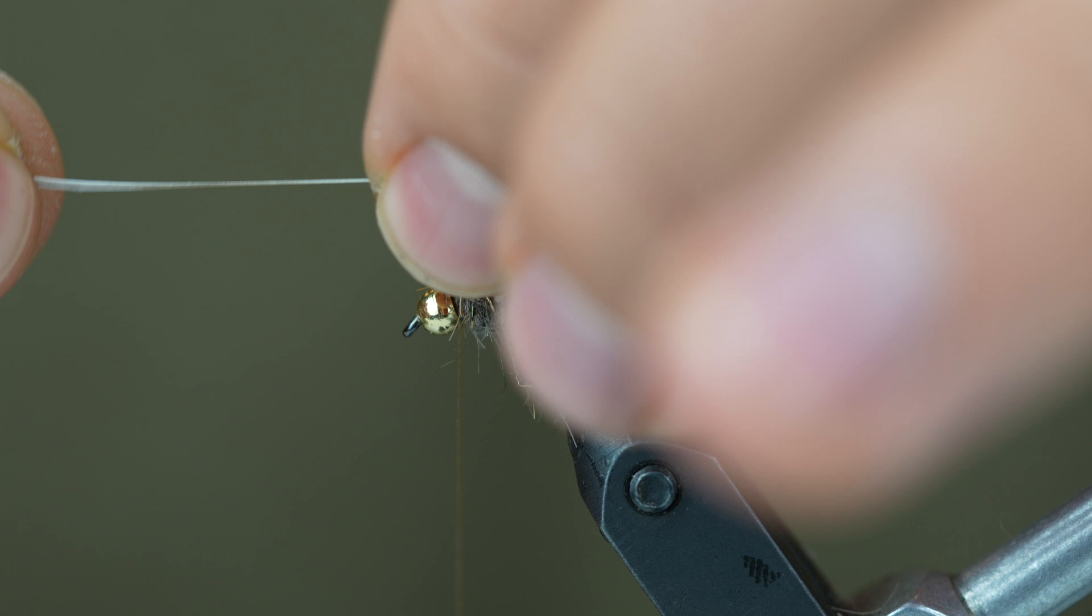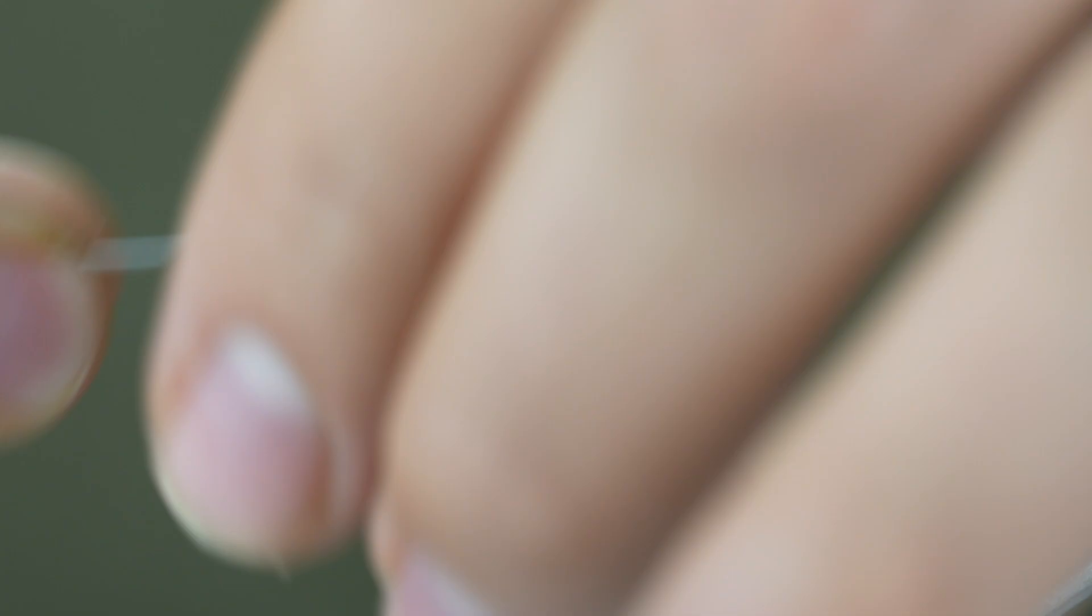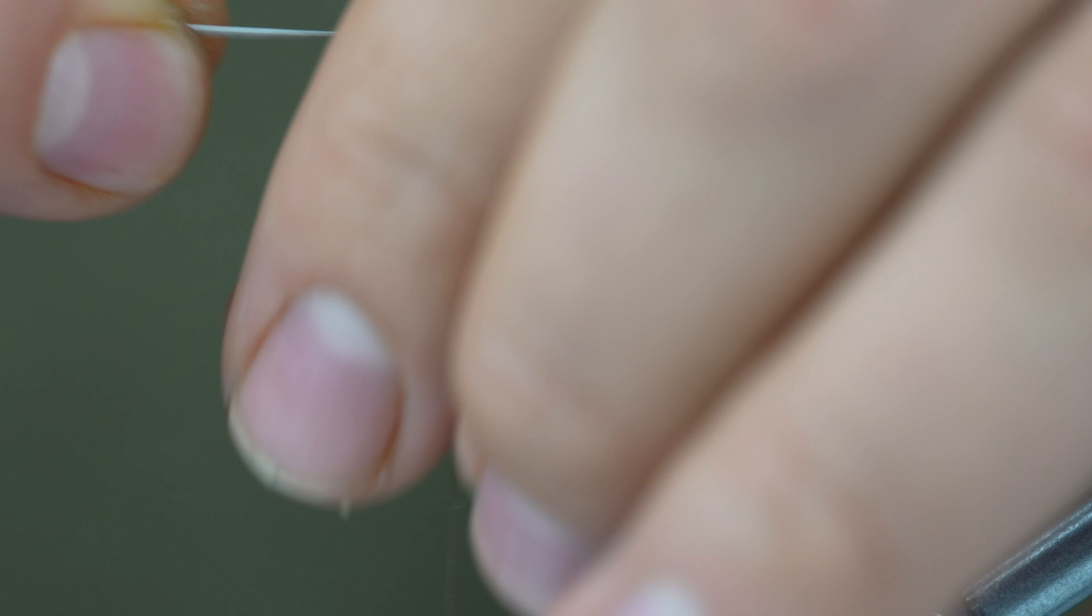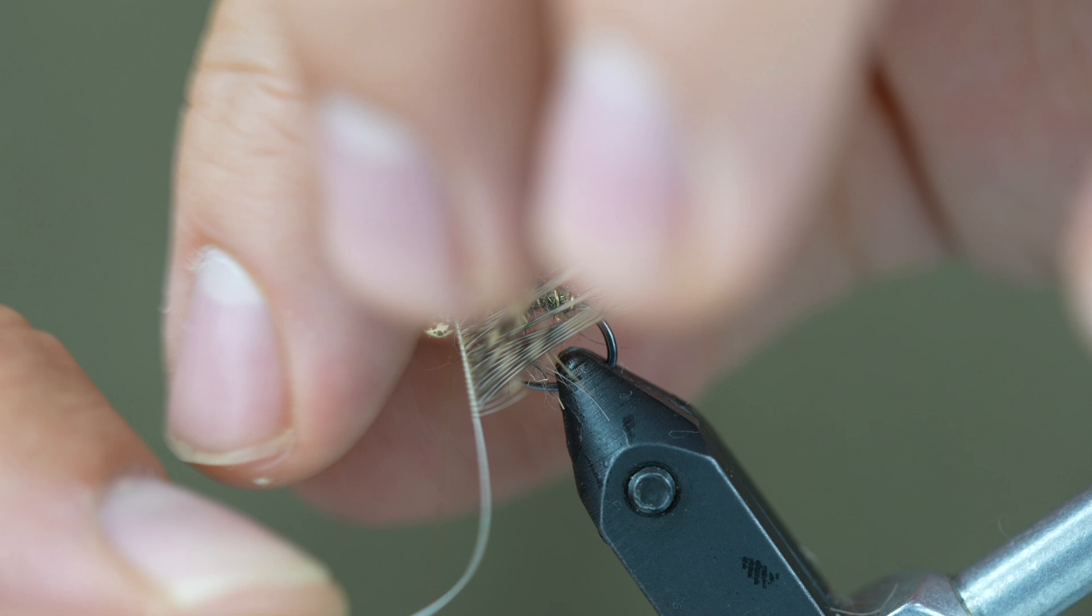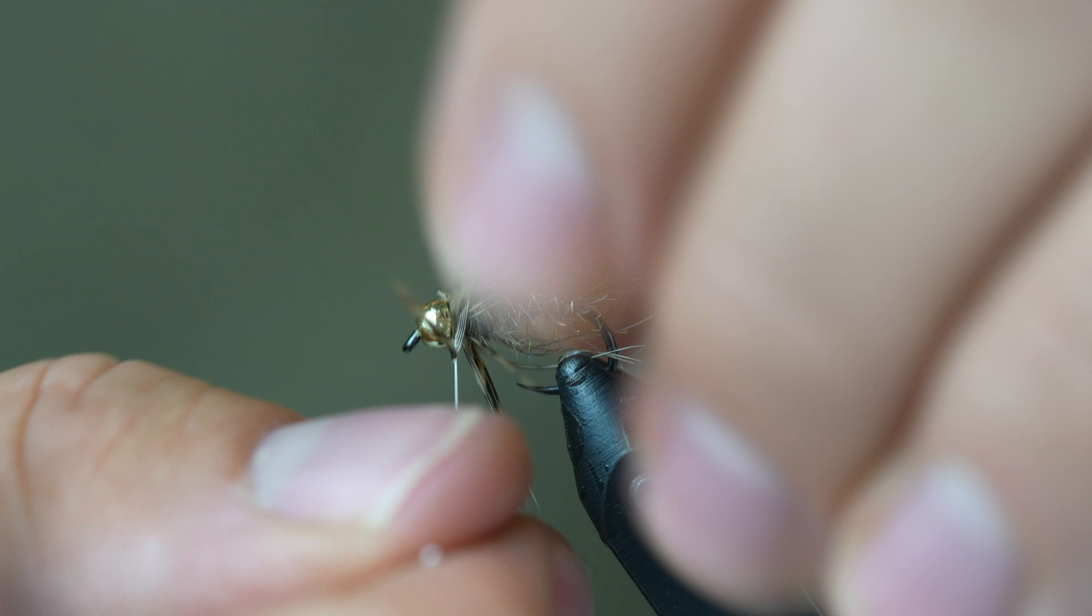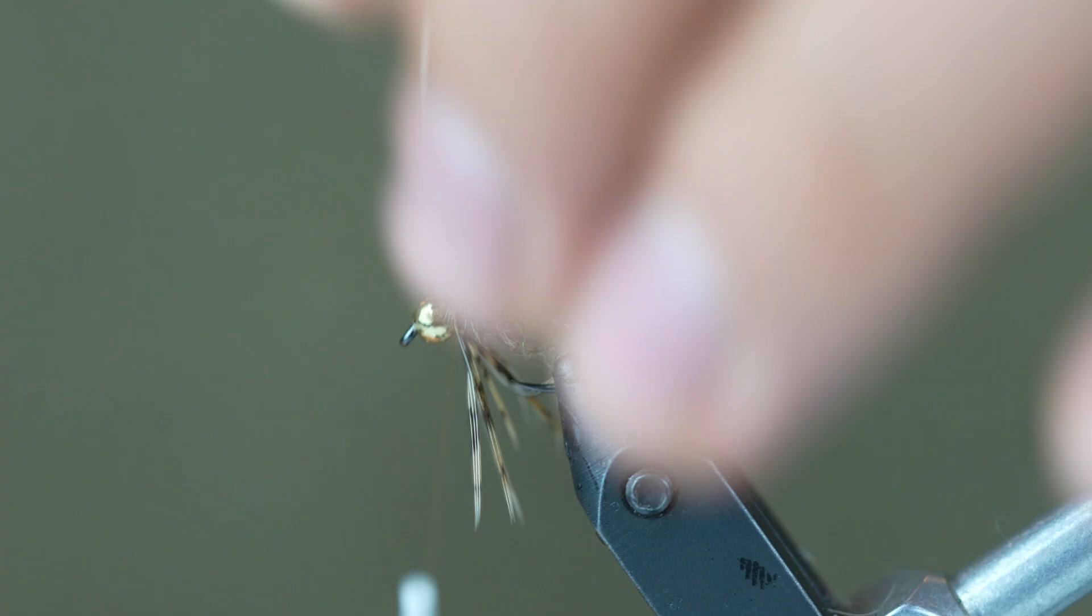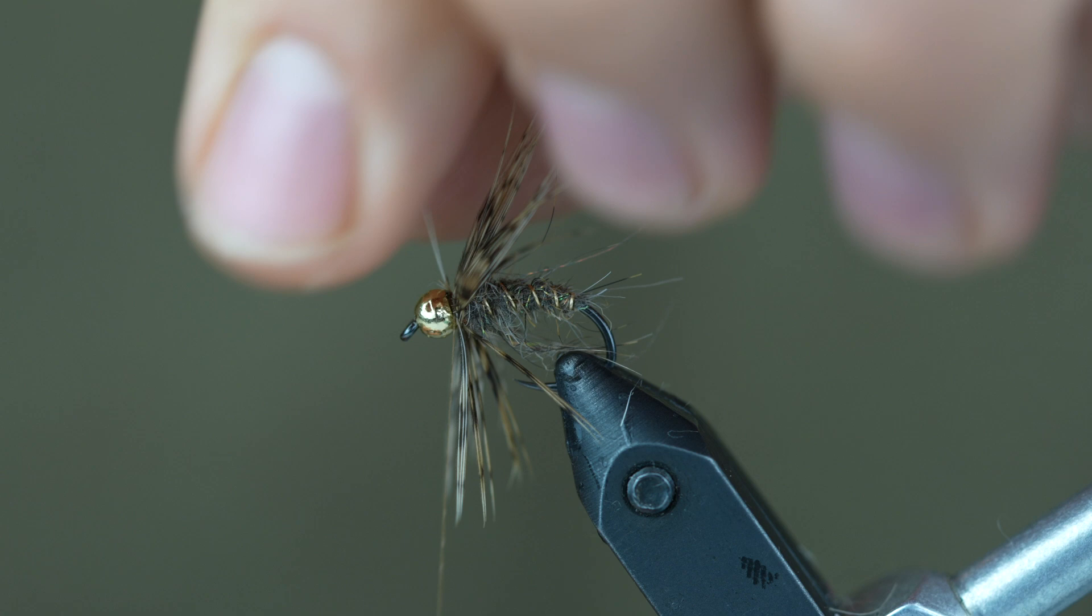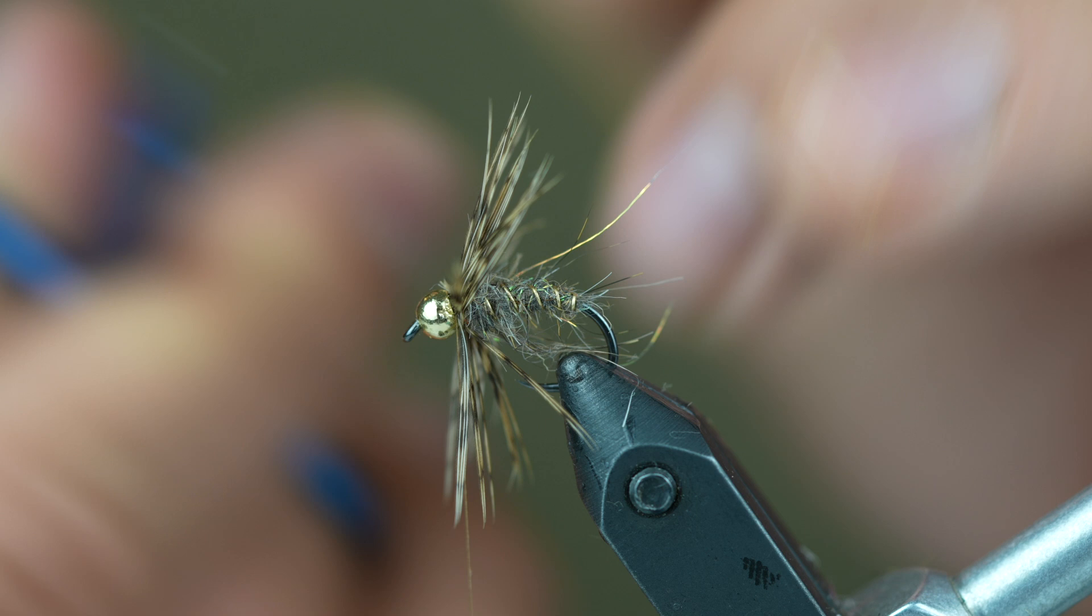Then we're going to take the feather and drag it between our thumb and forefinger of the left hand just to fold all those fibers back so they're all on the same side. Then we're going to take it and turn and wrap that hackle around, and then bind down that feather stem and trim it off.